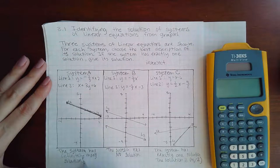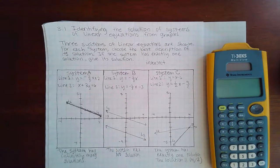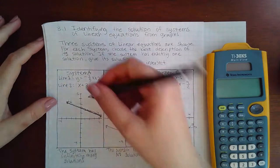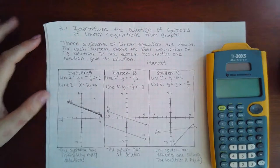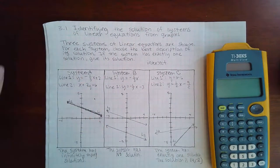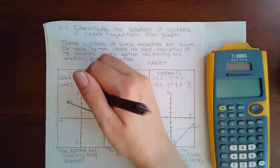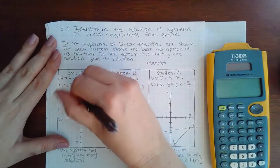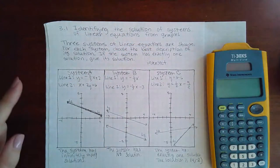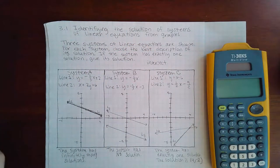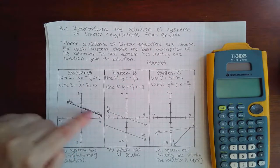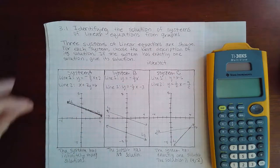Now be careful with that idea. That does not mean that everything is a solution. Because if you notice, this point over here is not part of the solutions at all. So even though there are an infinite number of solutions, that doesn't mean that everything is a solution. Only the points along those two overlapping lines are the infinite solutions.